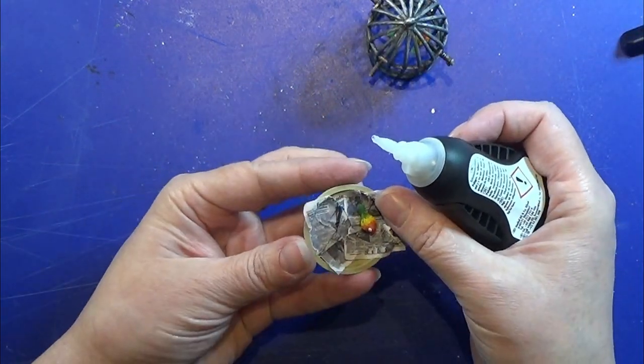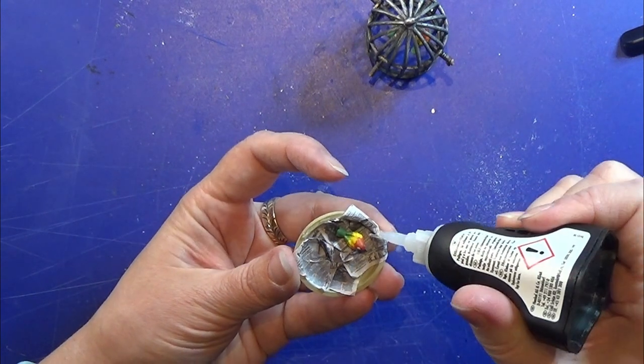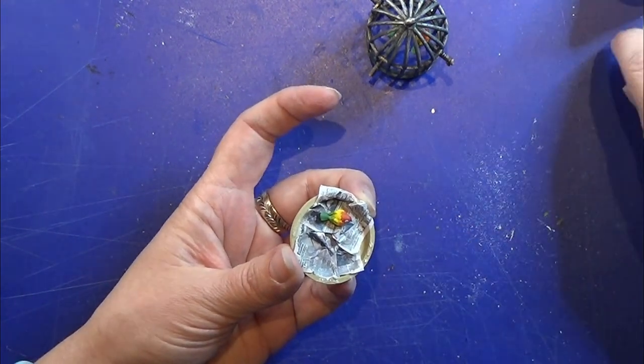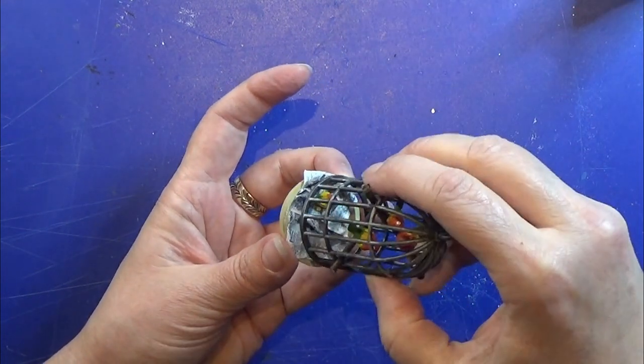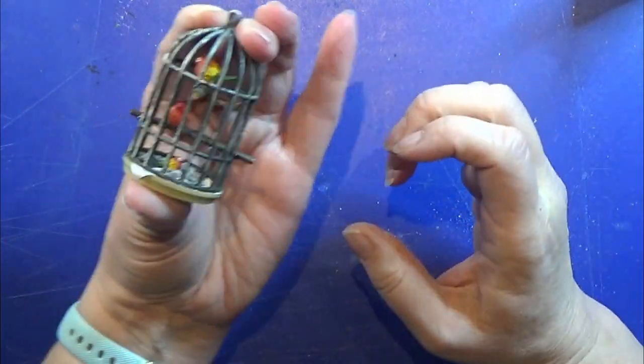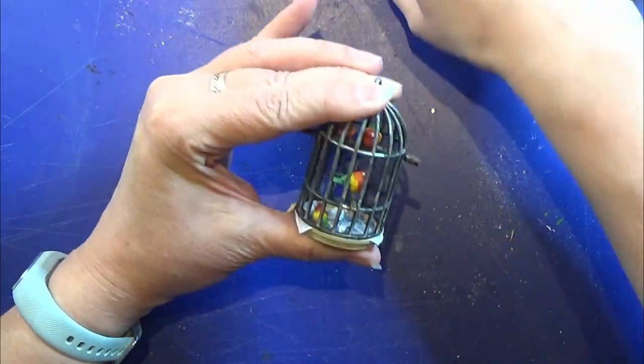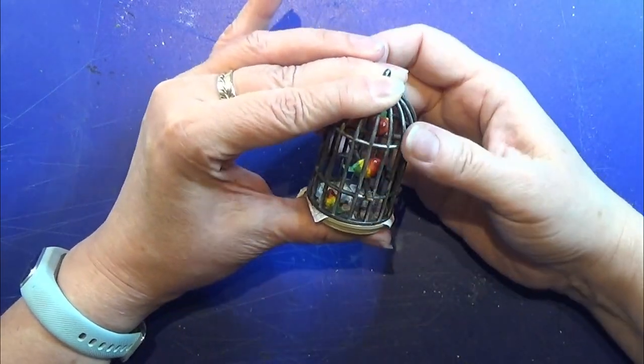I am going to glue this little bottom of the cage onto the top of the cage. So I am just placing some of my super gel glue here at the bottom part, and just placing the top part like I want it to sit and keep it together for a few seconds until the glue has hardened.